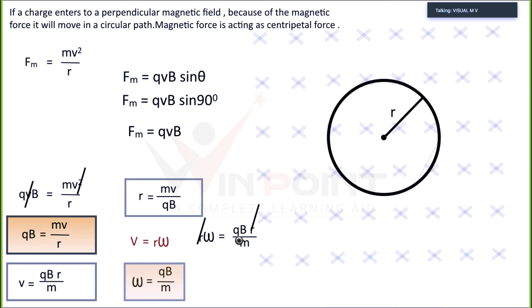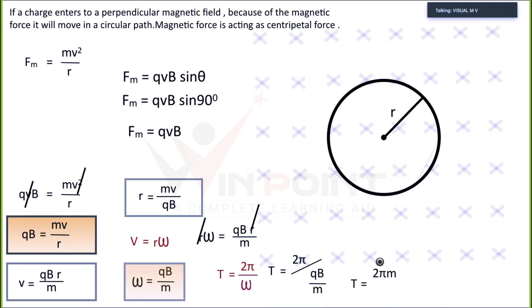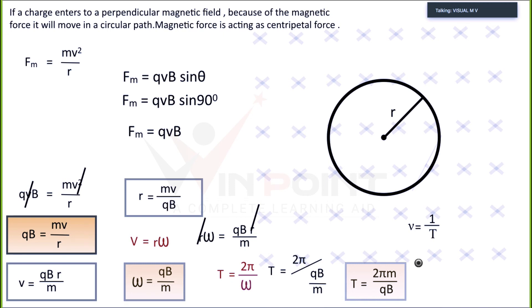The relation between time period and angular velocity is T = 2π/ω. Substituting ω = QB/M gives T = 2πM/QB. This is another important equation. For frequency, since ν = 1/T, taking the reciprocal: ν = QB/2πM.